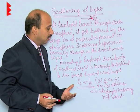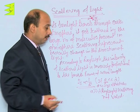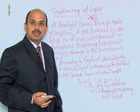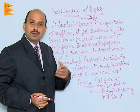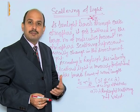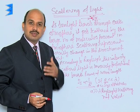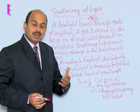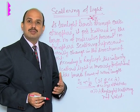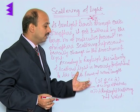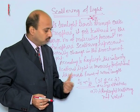According to Rayleigh's scattering, blue color is scattered the most in the atmosphere, because the wavelength of blue color is much smaller than the size of the molecules — shorter wavelengths are scattered more than longer wavelengths. Violet color also scatters more than blue, but our eye is more sensitive to blue color, which is why we see the sky as blue. So according to Rayleigh's scattering, the sky appears blue due to the maximum scattering of blue light.